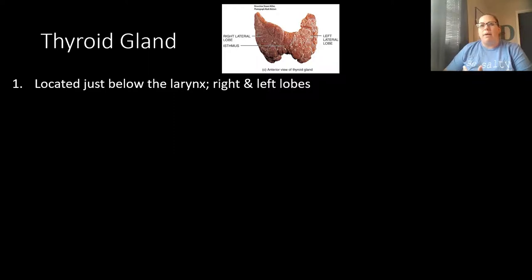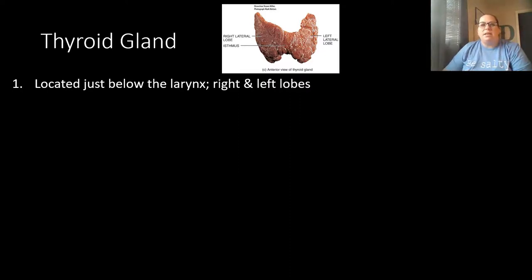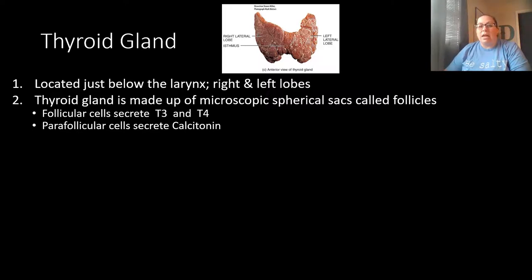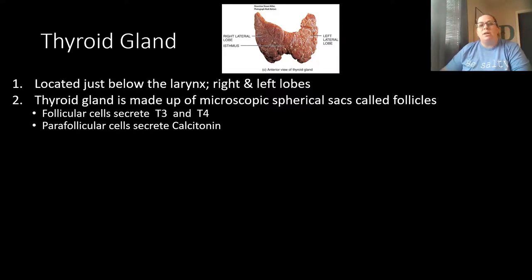The thyroid gland is a butterfly-shaped structure located just below the larynx (voice box), with a right and left lobe. It is made up of microscopic spherical sacs called follicles. Follicular cells within the follicles produce two hormones: T3 and T4. Parafollicular cells on the outside of the follicles secrete the hormone calcitonin.